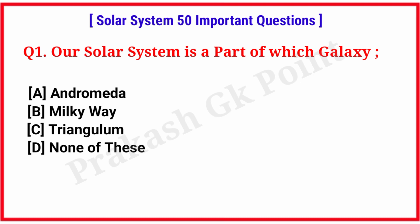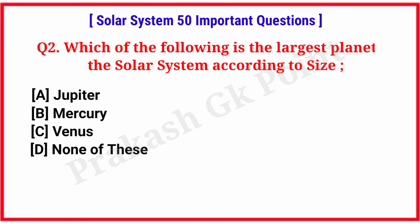First question: our solar system is a part of which galaxy? Answer: option B, Milky Way. Next question: which of the following is the largest planet of the solar system according to size? Answer: option A, Jupiter.